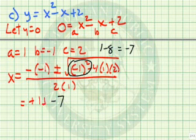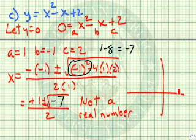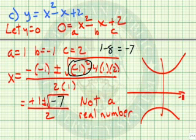So we have 1 plus or minus the square root of negative 7, all divided by 2. So wait a minute, we have a negative inside the square root sign, so not a real number for our solution here. That means the graph, instead of hitting the x-axis, is either above it or below it and it does not hit the x-axis at all.